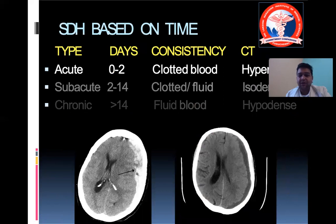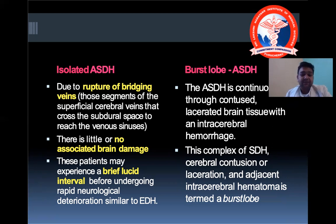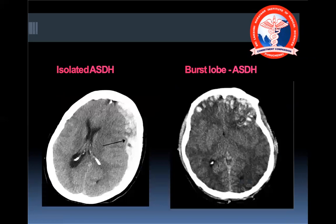SDH is classified by time as acute, subacute, or chronic. There can be isolated acute SDH or a burst lobe acute SDH. Isolated SDH is due to rupture of bridging veins with no brain damage, and patients may experience a brief lucid interval. A burst lobe involves cerebral contusion with adjacent intracerebral hematoma in continuity with the contused and lacerated brain tissue.